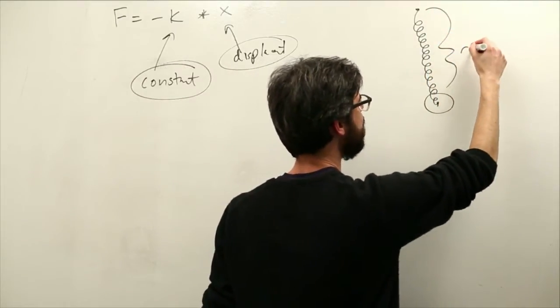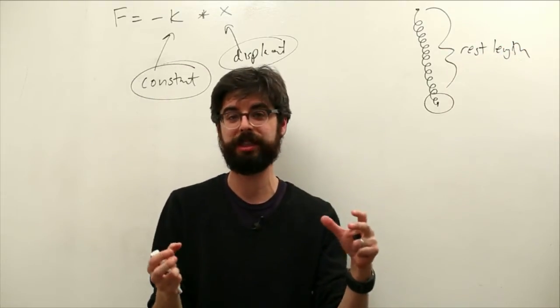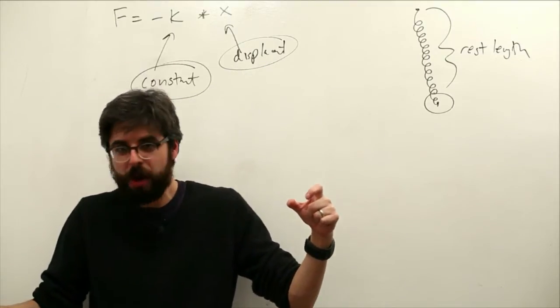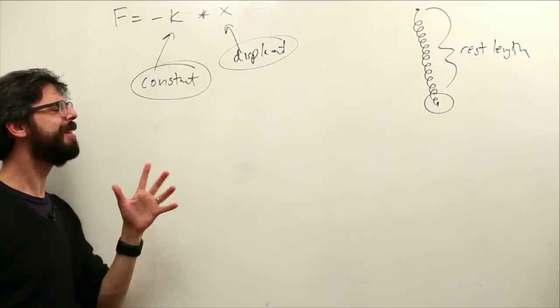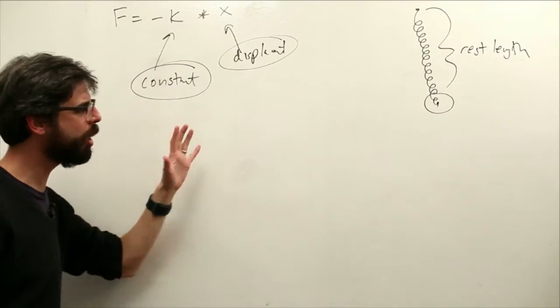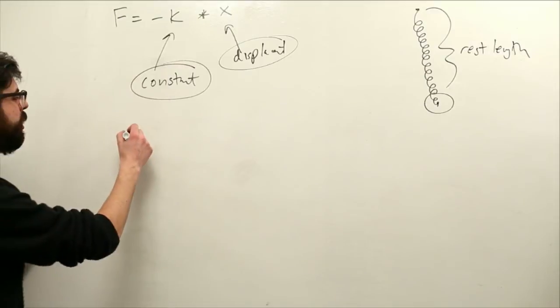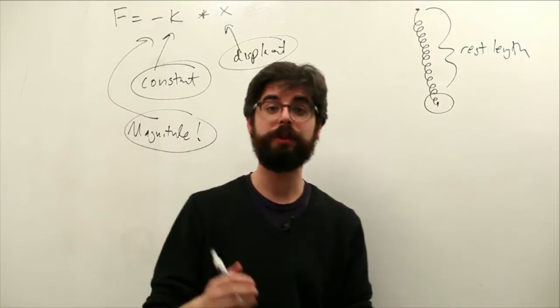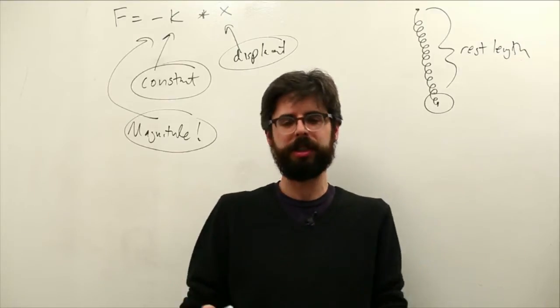This is something that's really important. A spring has a rest length. That is the length of the spring will naturally kind of gravitate towards at rest. That's where it will sit without moving, without springing at all. As soon as we displace it from that rest position, we'll let go, it's going to spring back and forth. Now one thing I just noticed about this formula, this is going to be a vector. We're going to have a spring that's in a two-dimensional world. So this is actually really just telling us the magnitude of the force.